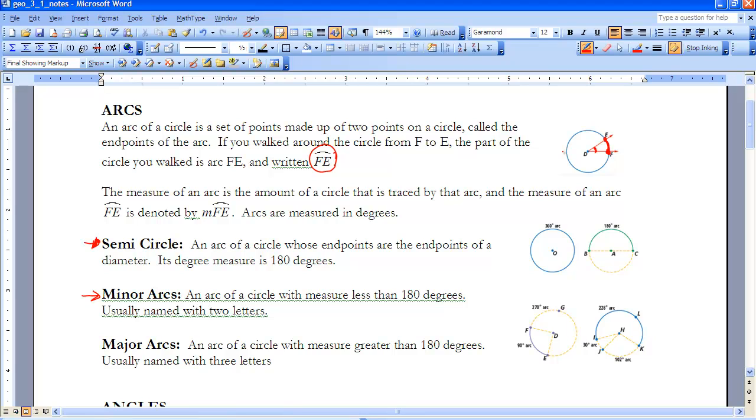A semicircle would be an arc that is exactly 180 degrees, as you can see here in this diagram, exactly 180 degrees.